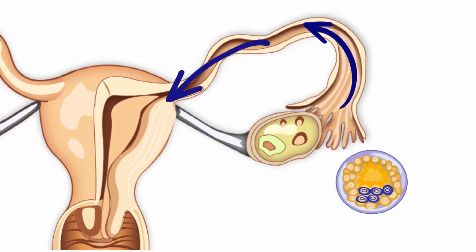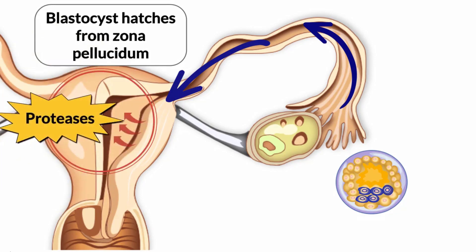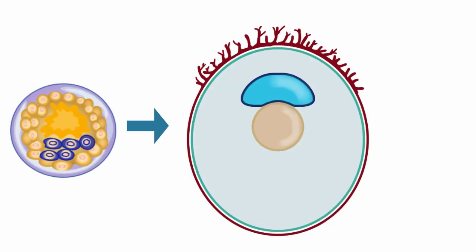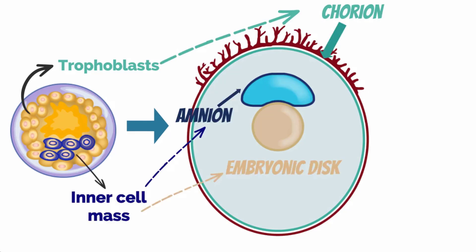As the blastocyst nears the endometrial cavity, the blastocyst is released, or hatched, from the surrounding zona pellucida in response to proteases secreted by the endometrium. The hatched blastocyst and its trophoblasts are then able to associate with the endometrium, and the blastocyst implants at days 6 to 7. As mentioned previously, the trophoblasts differentiate to form the chorion, while the inner cell mass differentiates to form the amnion and embryonic disc.